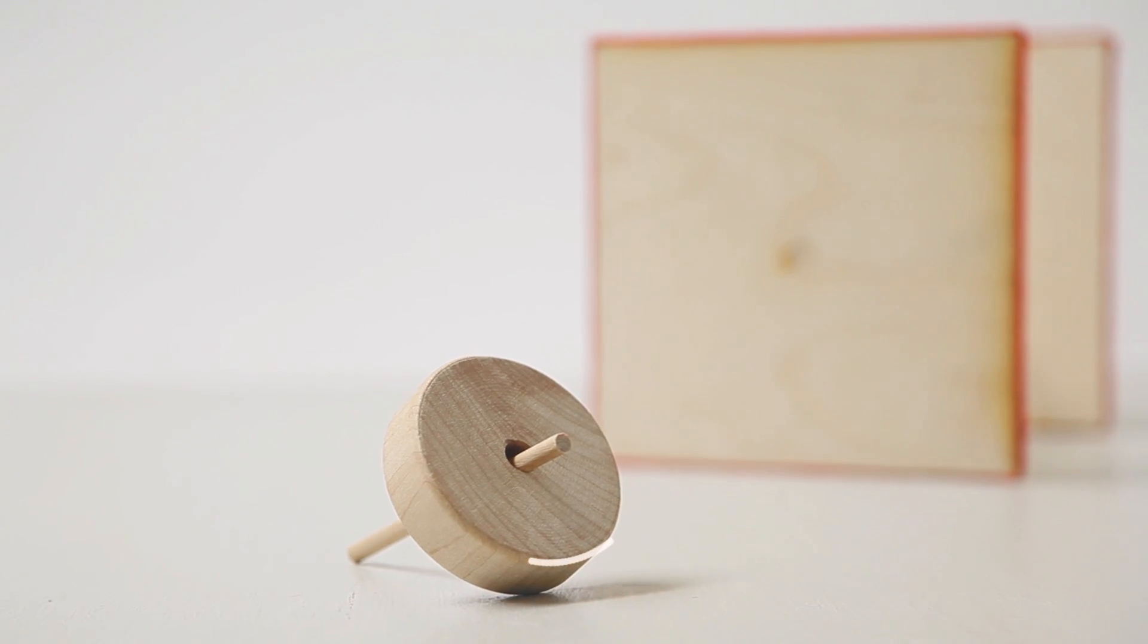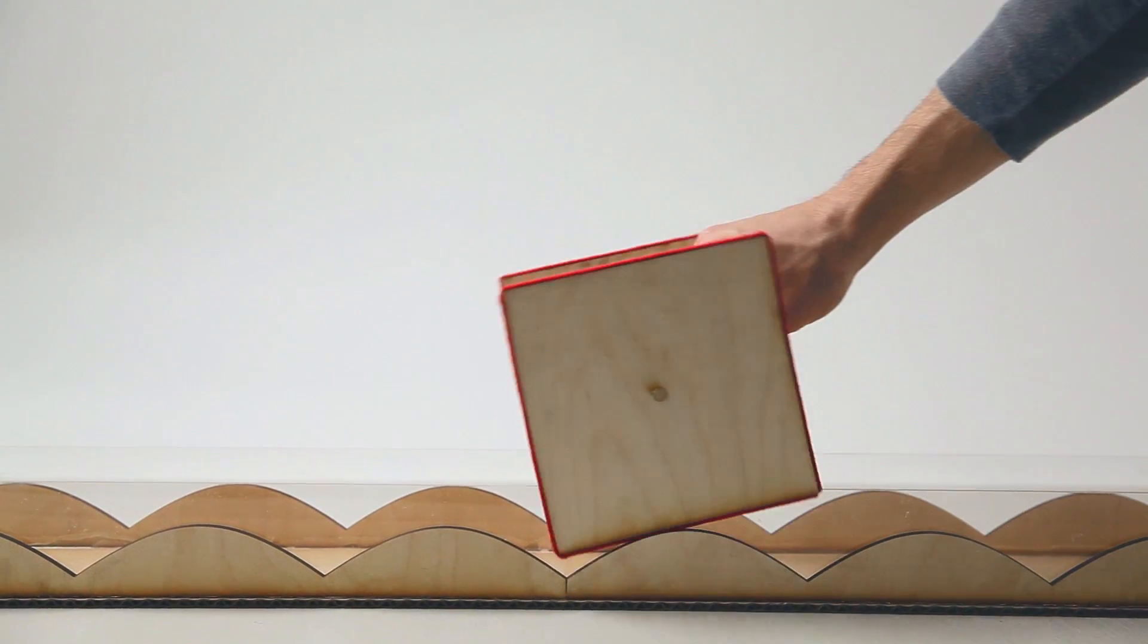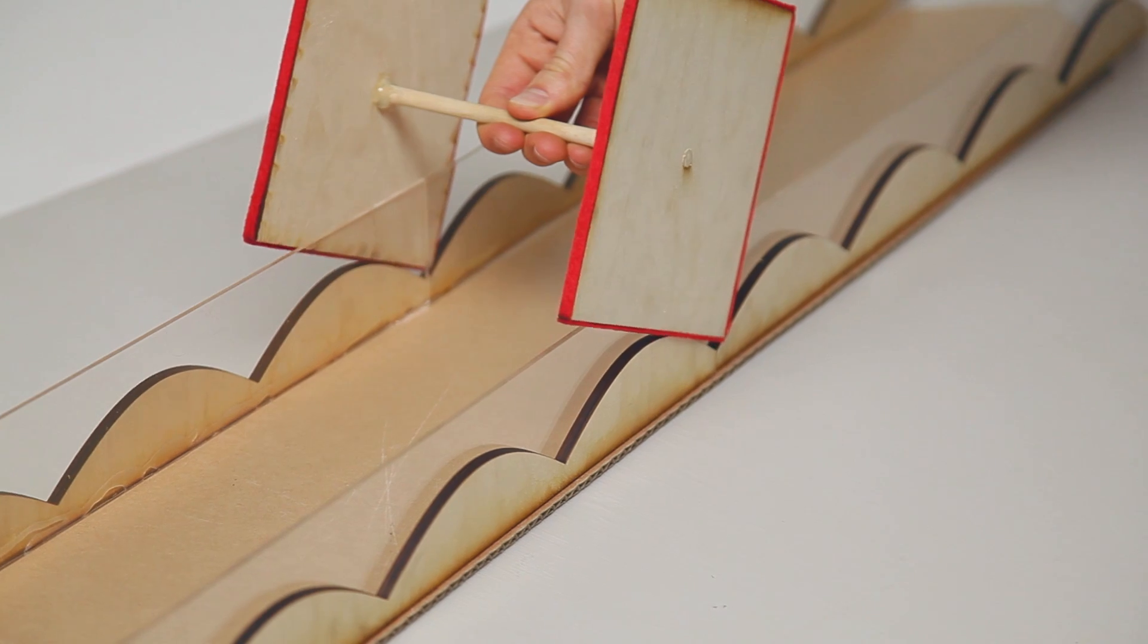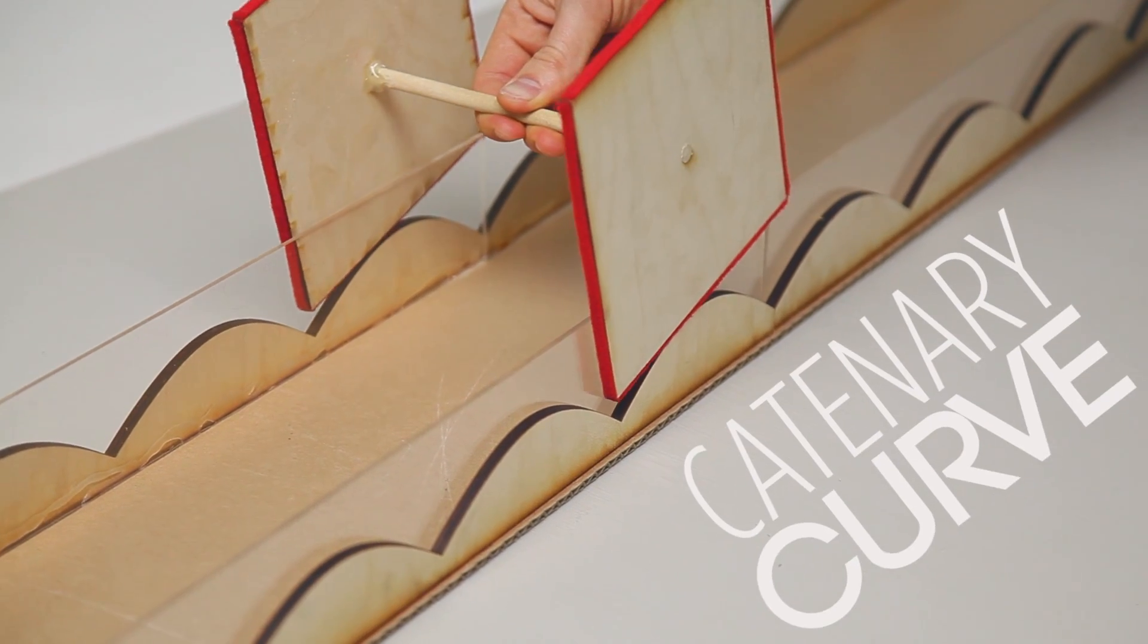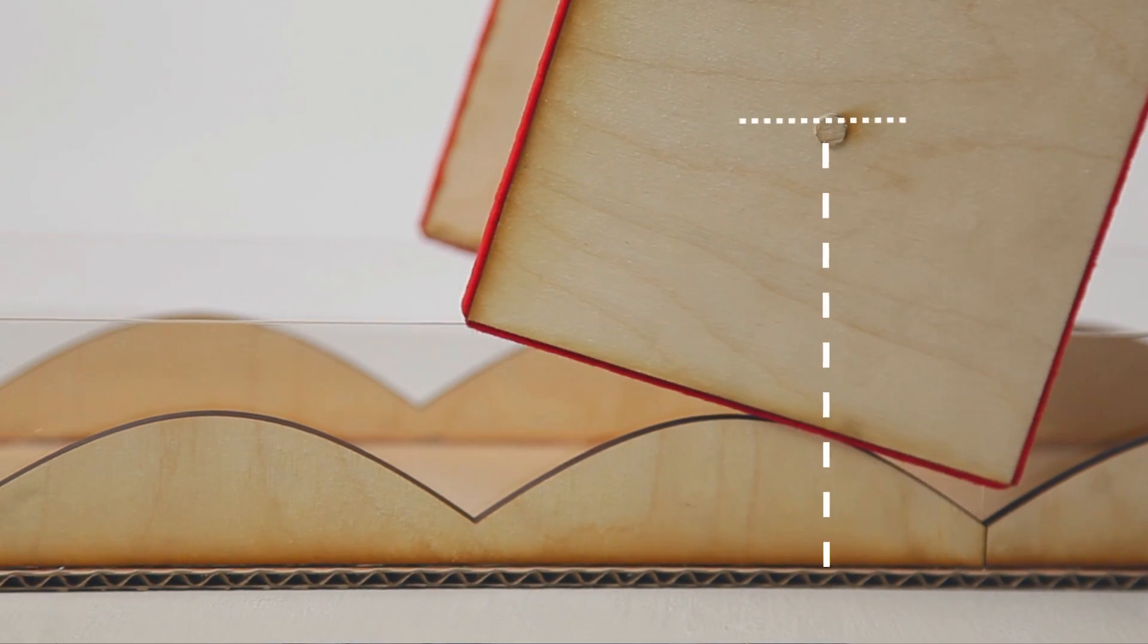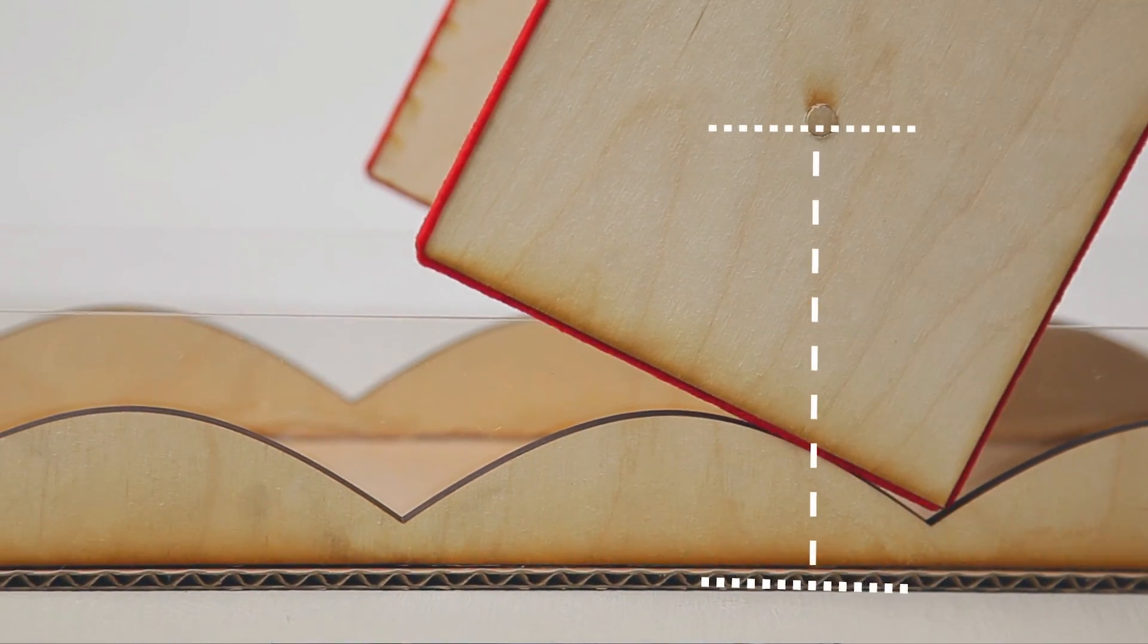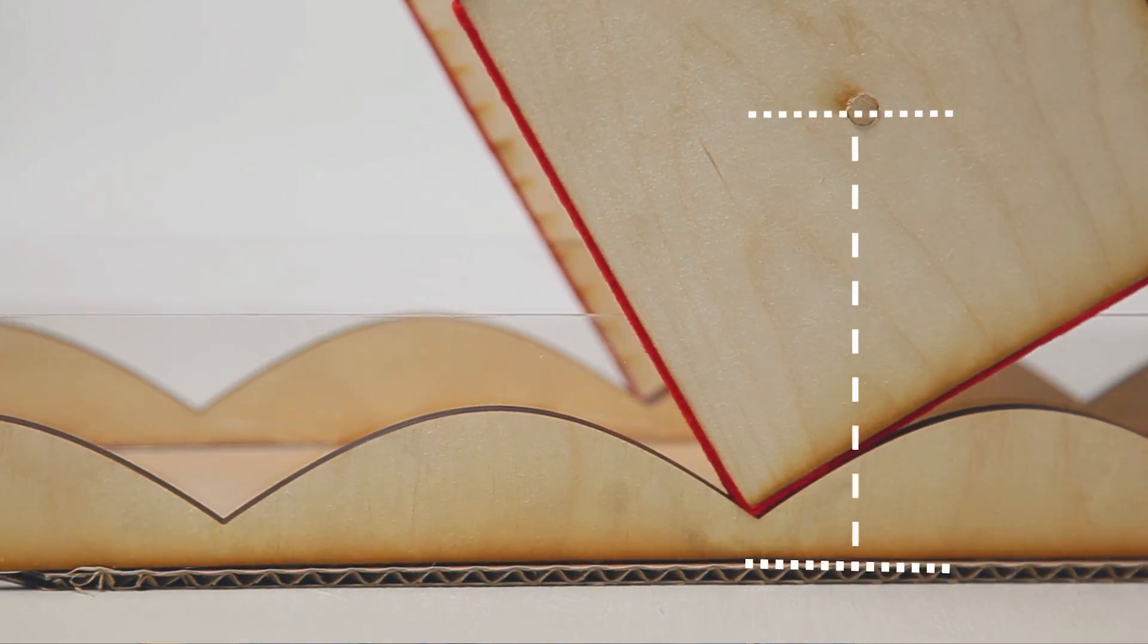So, is it possible to make a square wheel turn? Turns out it is. You just have to change what it's rolling on. What we have here is a track made of special curves called catenary curves. Now, these curves are designed so that our axle on our square wheel stays parallel to the ground, not the track, as the wheel rolls. This allows it to roll smoothly.